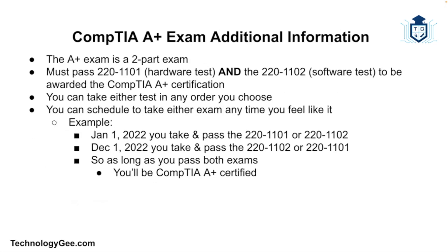The CompTIA A-Plus certification is a two-part exam. You must pass both the 220-1101, known as the hardware test, and the 220-1102, known as the software test, in order to be awarded the CompTIA A-Plus certification. Each exam has its own separate price of $239 if you pay full price.